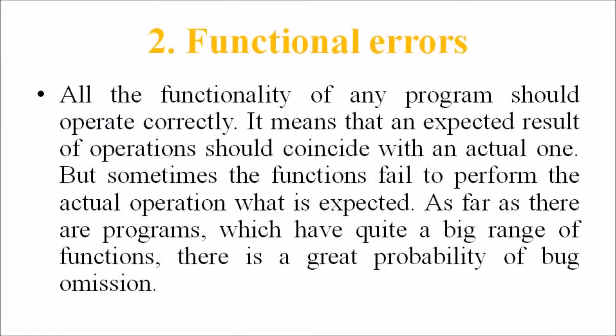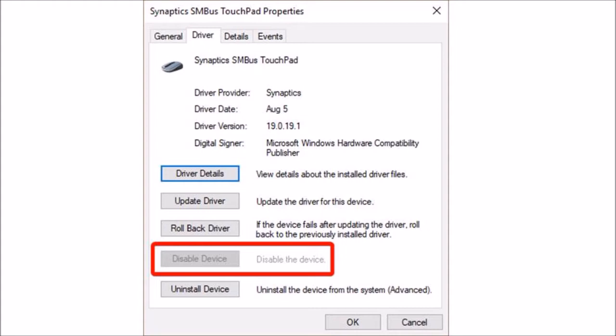The second type is functional errors. All the functionality of any program should operate correctly — it means that an expected result of operations should coincide with an actual one. But sometimes the function fails to perform the actual operations that are expected. As programs can have quite a big range of functions, there is a great probability of bug omission. Such types of errors can vary from unclickable buttons to inability to use the main functionality of the software.